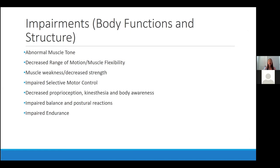The most common impairments we see in physical therapy — certainly not an exhaustive list, but focusing on the most common given time constraints — include abnormal muscle tone, decreased range of motion and muscle flexibility, decreased muscle strength, impaired selective motor control, decreased proprioception, kinesthesia and body awareness, impaired balance and postural reactions, and impaired endurance.